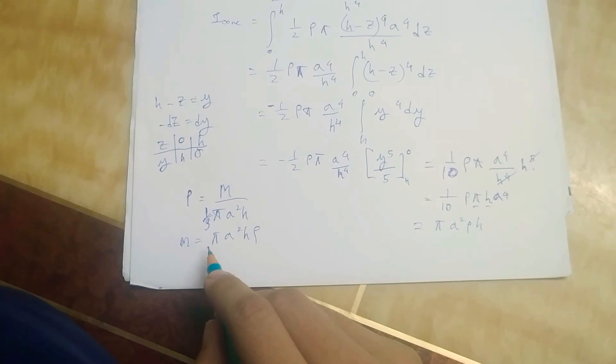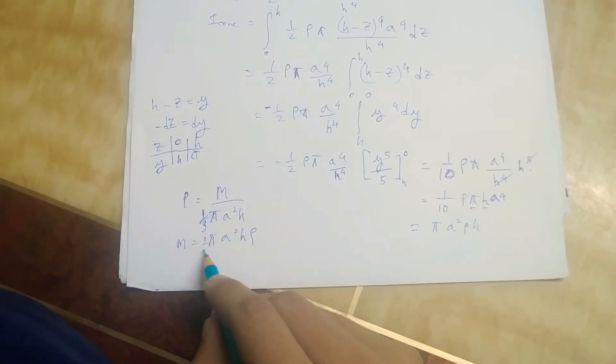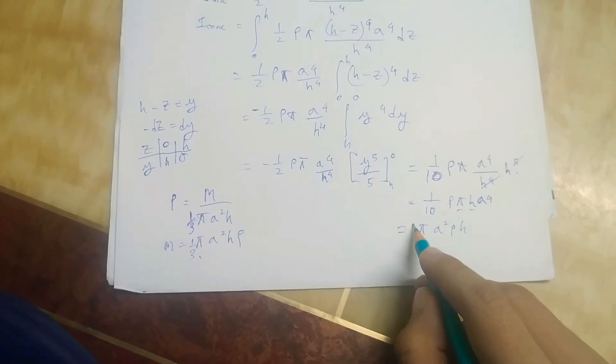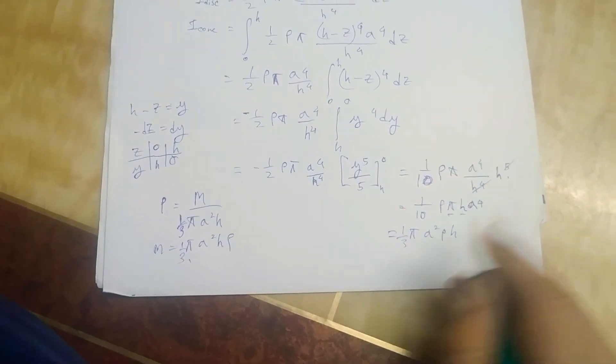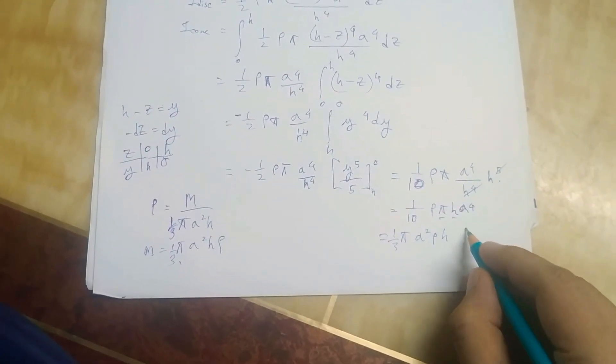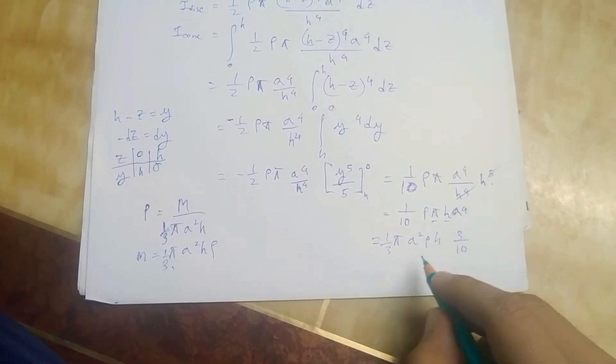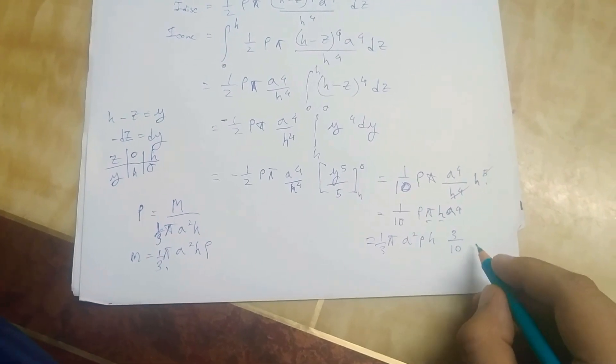So this will be like this and here we need one-third, so we'll write here one-third and we'll multiply three on the other hand. So it will be like equal to what it was.